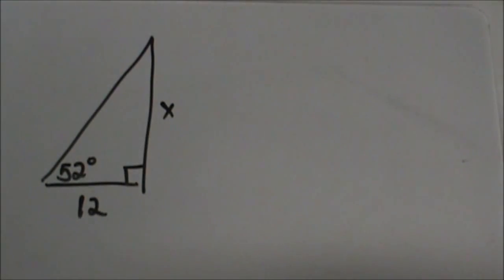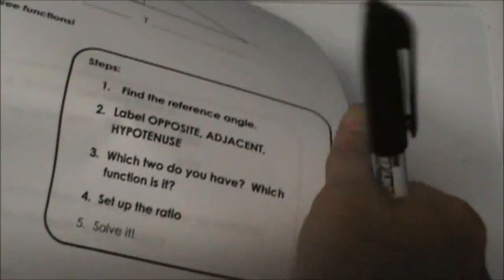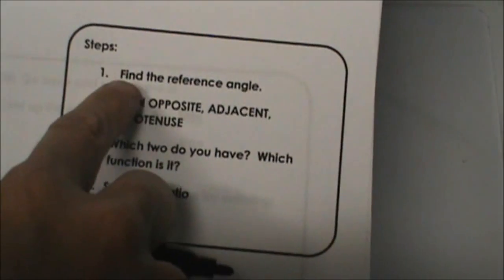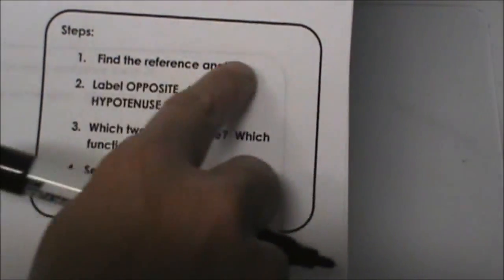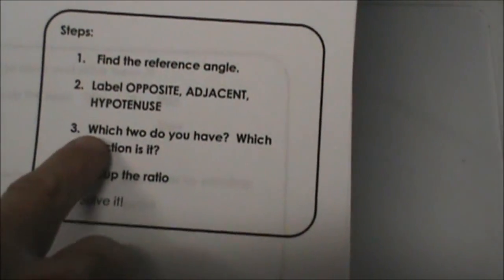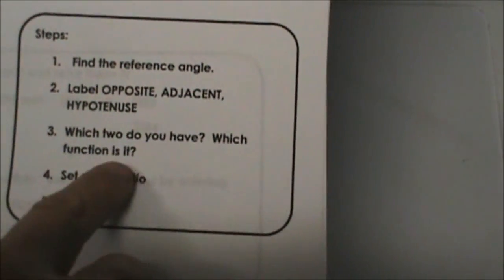I've got the steps over here on the right side for you. The first step is we're going to find the reference angle, then we're going to label our opposite, adjacent, and hypotenuse based on that reference angle. Then we're going to decide which trig function we're going to use when we're going to set it up.